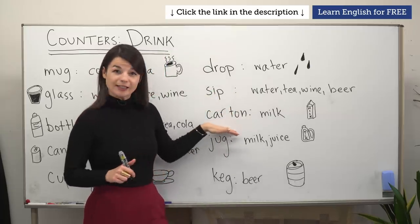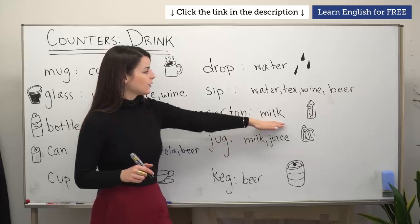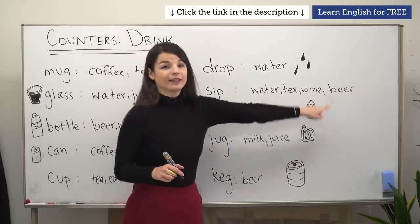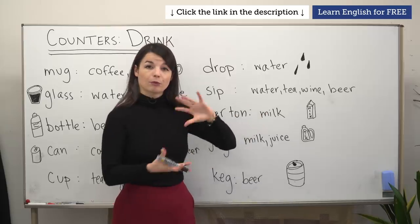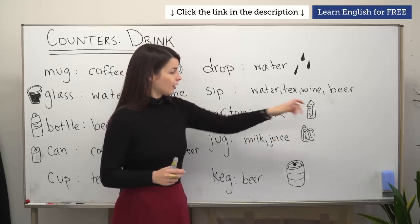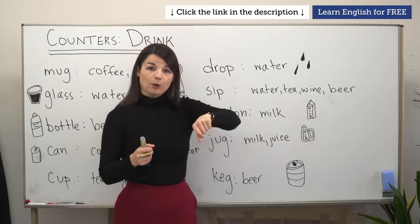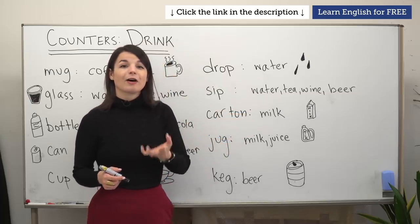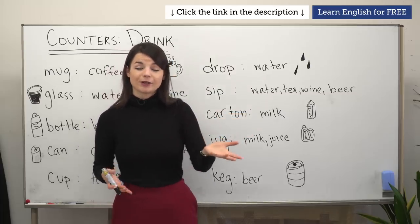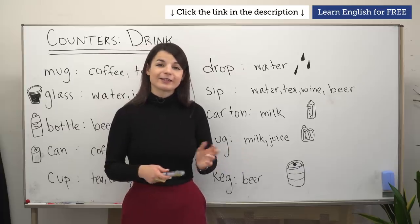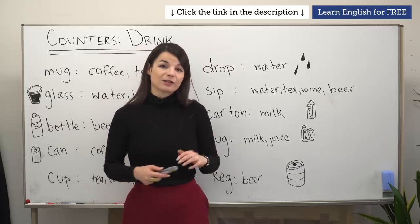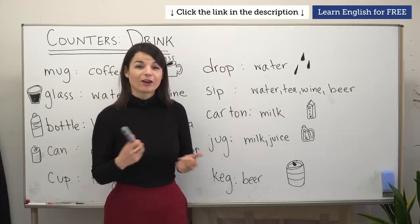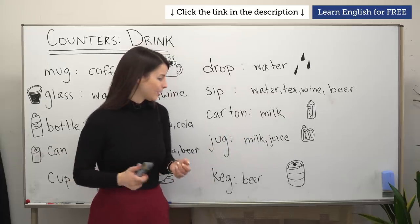Next one is carton. I've used milk here as the primary example, but anything sold in this sort of cardboard shape that we have to open and pour from, we can use the word carton to describe. So a carton of milk. In your country or city, there might be a different item sold in cartons. You can use carton to count it — one carton of milk, two cartons of milk.